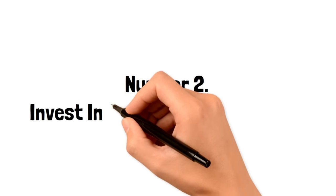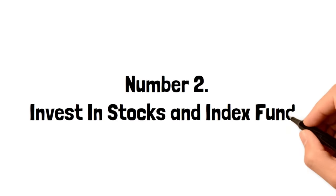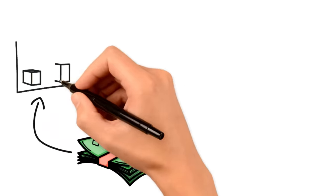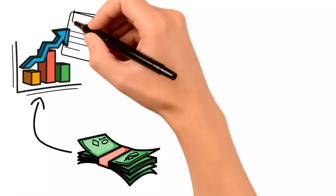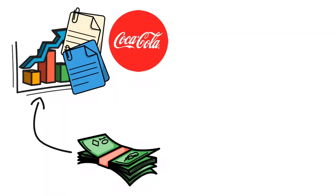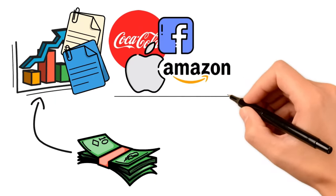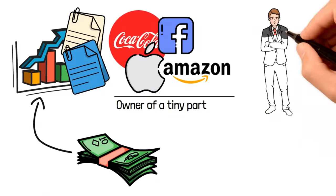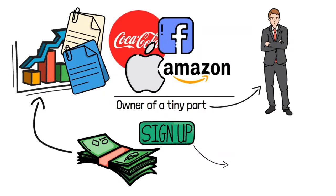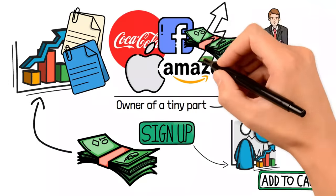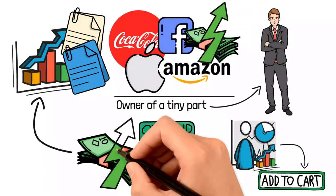Number two, invest in stocks and index funds. The quickest way to multiply your $800 passively is via the stock market. You can invest in the stocks of your favorite companies. For instance, you can invest in the stocks of Coca-Cola, Heinz, Amazon, Apple, Facebook, and so on. By buying a stock, you become an owner of a tiny part of the company. To invest in stocks, just visit a brokerage, select the stock you want to buy, and then pay for it. When these companies make money, so do you.